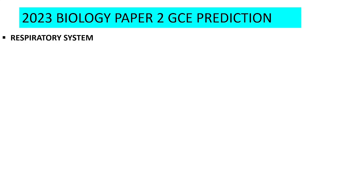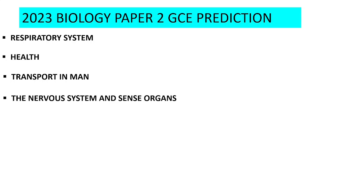The Respiratory System appears in almost every year in the examination, both in Paper 2 Section A and Section B, so you need to take care of it. Health has also been coming regularly and has subtopics under it. Transport in Man also appears to be one of the topics that doesn't miss in the examination.